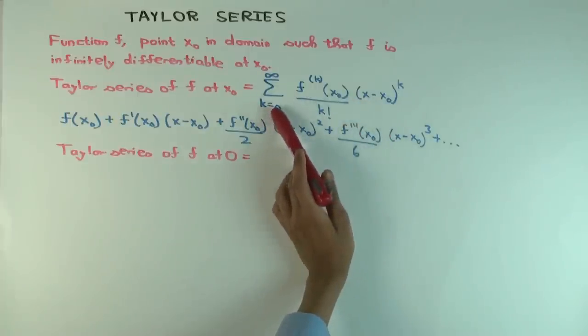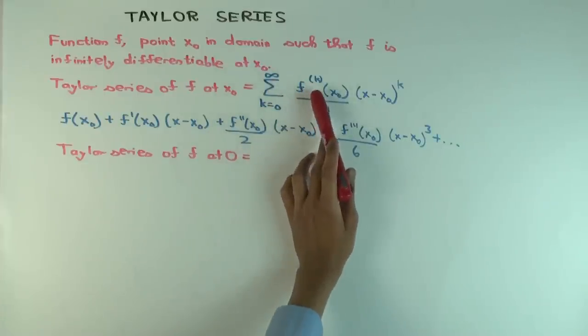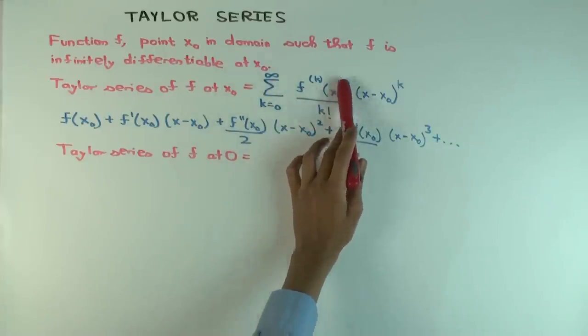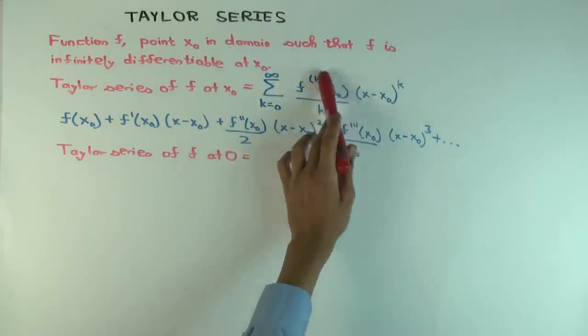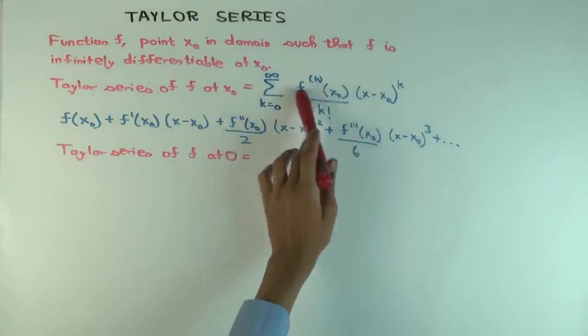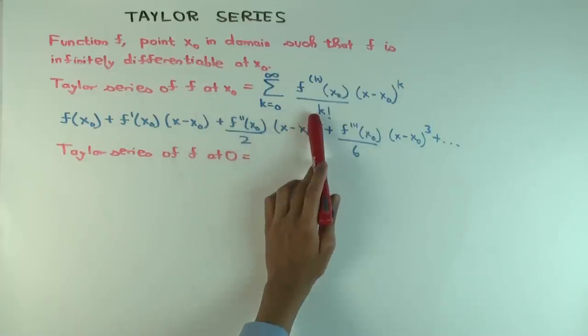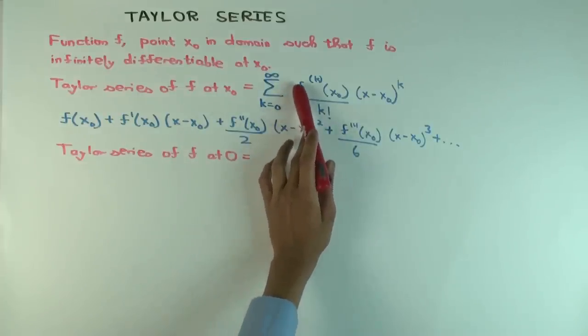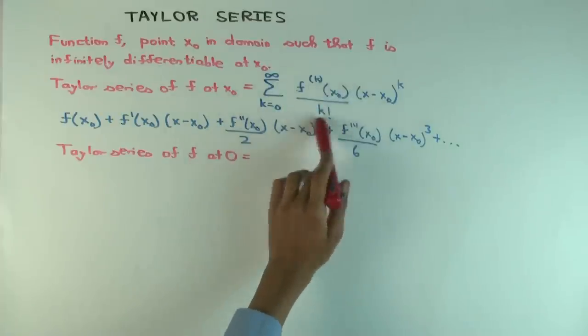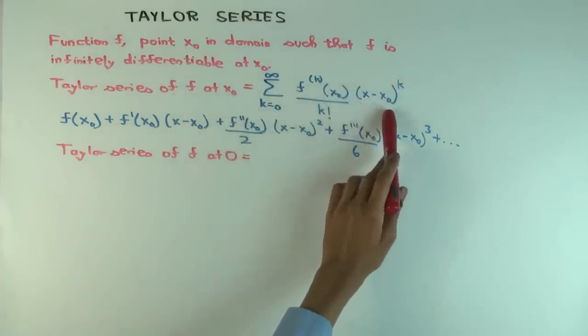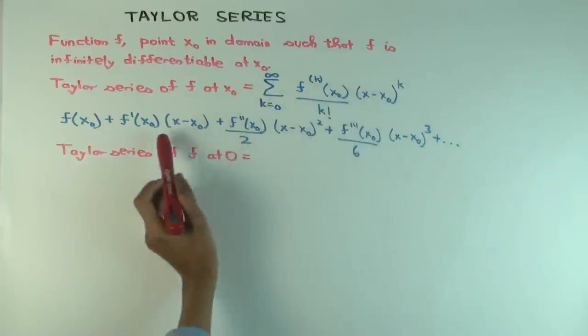And we're taking the sum from k equals 0 to infinity of the kth derivative of f at x0. So this is a number, because x0 is a number. So this is a number divided by k factorial, which is the product of the numbers from 1 to k. This whole thing, it will be a number, and this number you're multiplying by this polynomial, or this power of x minus x0.